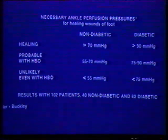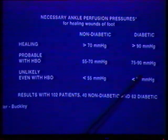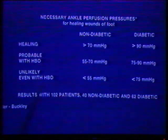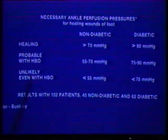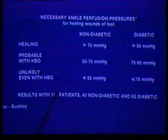Buckley worked out a system of identifying critical vascular pressures. Most importantly for the diabetic, if you do a Doppler ankle pressure and it's less than 75 mmHg at the ankle, it is unlikely the patient will heal even with hyperbaric oxygen. In the non-diabetic, the key pressure is about 55 mmHg. These results were gleaned from 102 patients — 42 non-diabetic and 62 diabetic.